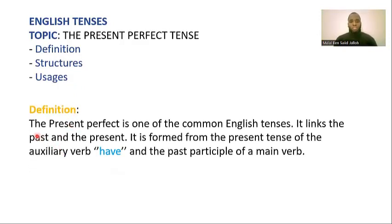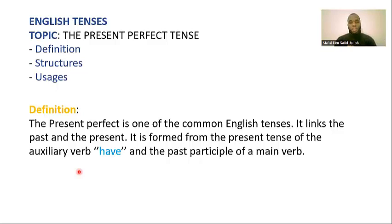By definition, the present perfect is one of the common English tenses. It links the past and the present. It is formed from the present tense of the auxiliary verb 'have.' When you want to conjugate a verb in the present perfect, the first thing you do is conjugate the auxiliary 'to have' in the simple present tense, and then you give the past participle of a main verb. When you do that, you have conjugated the verb in the present perfect tense.